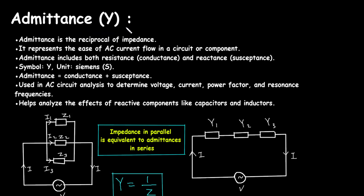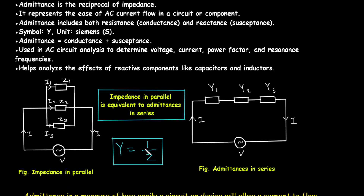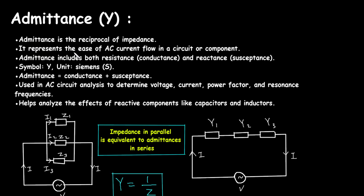Admittance is represented by capital Y. Admittance is the reciprocal of impedance: Y = 1/Z, where Z represents impedance. It represents the ease of AC current flow in a circuit or component. Admittance includes both resistance and reactance — resistance is the reciprocal of conductance and reactance is the reciprocal of susceptance, so we use G for conductance and B for susceptance.